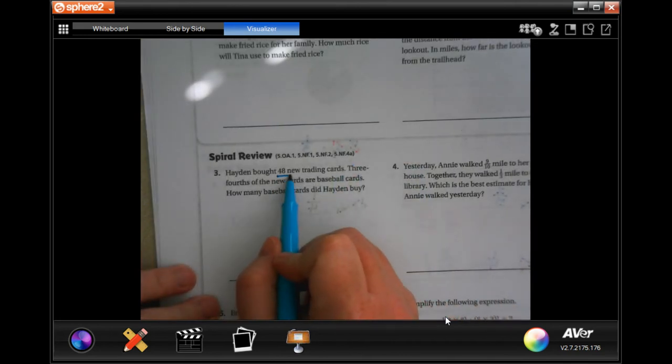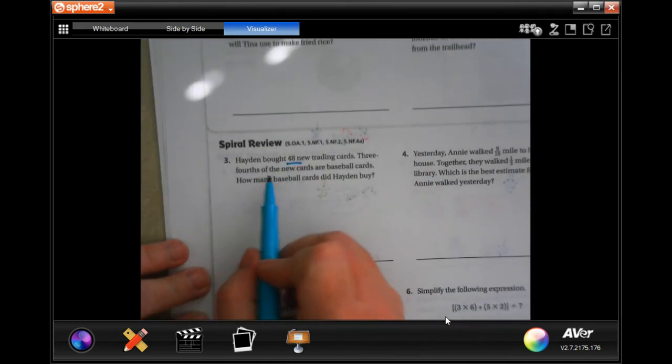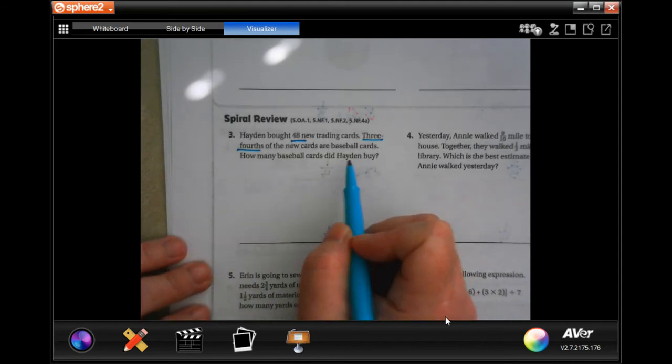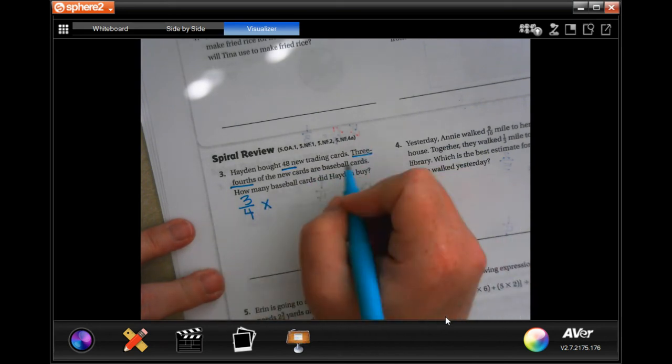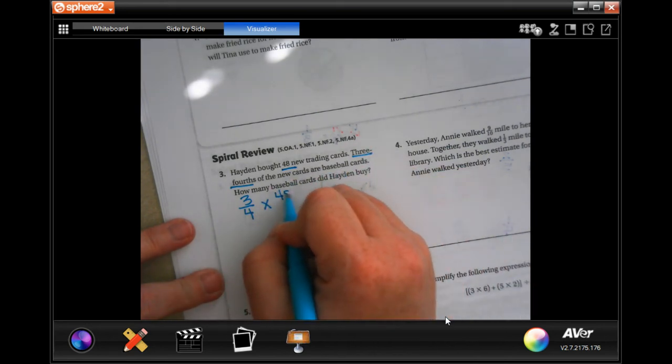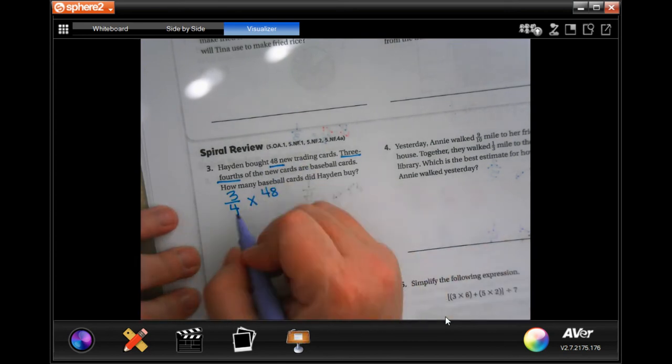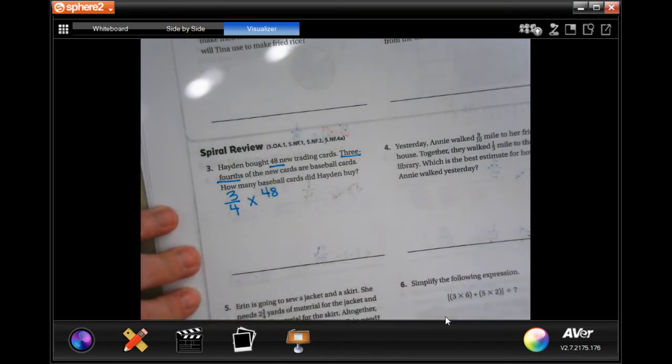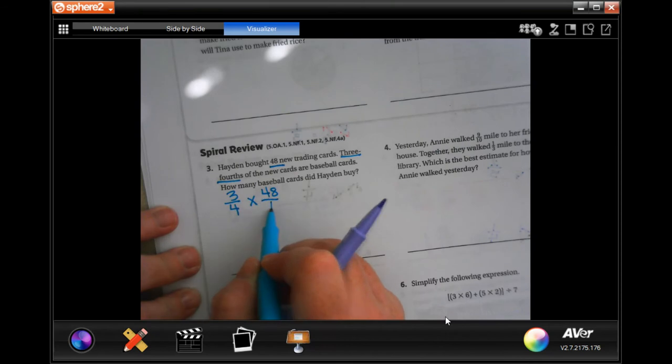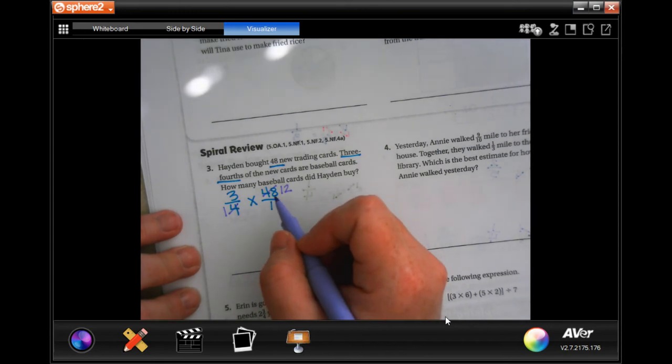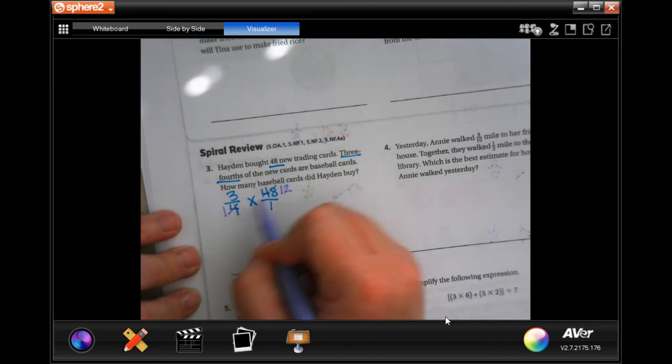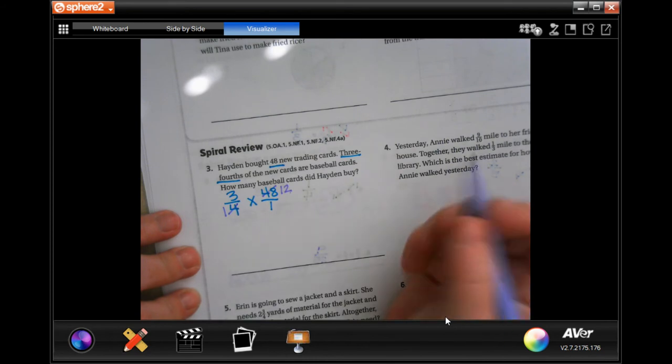Hayden bought 48 new trading cards. 3 fourths of the cards are baseball cards. How many baseball cards? So, 3 quarters of, because 'of' always means multiply, 48. Well, I'm going to put that 48 over 1. So, I have two fractions. And I know that 4 goes into 4 once, and 4 goes into 48 twelve times. Probably don't know that off the top of your head, but you do know that 4 goes into 4 once, 4 goes into 8 twice, 1 and 2. So, there you go.